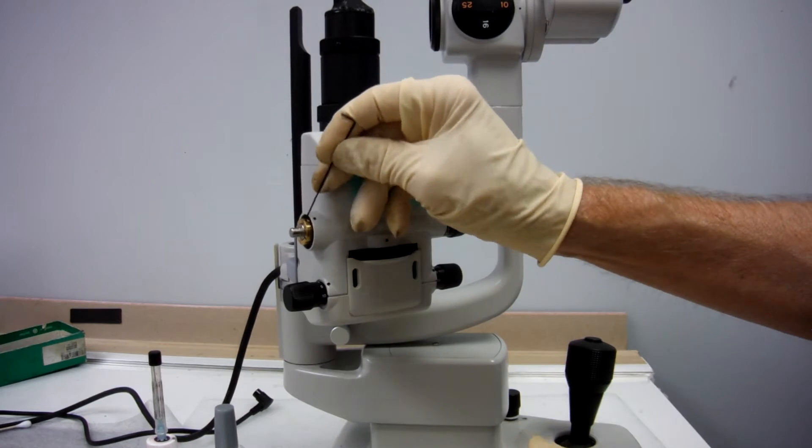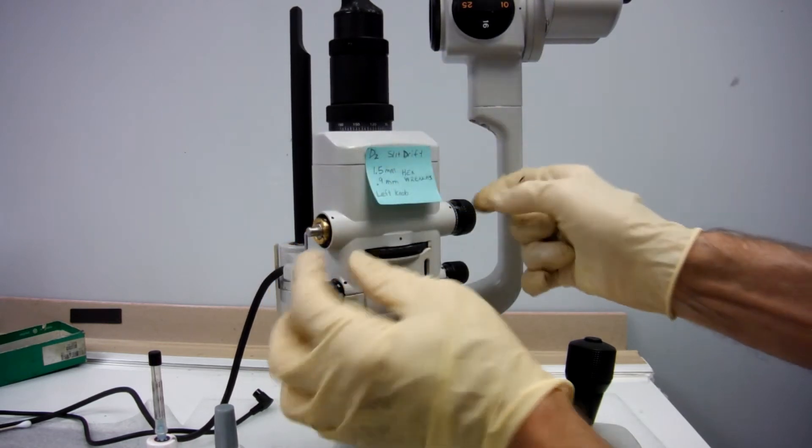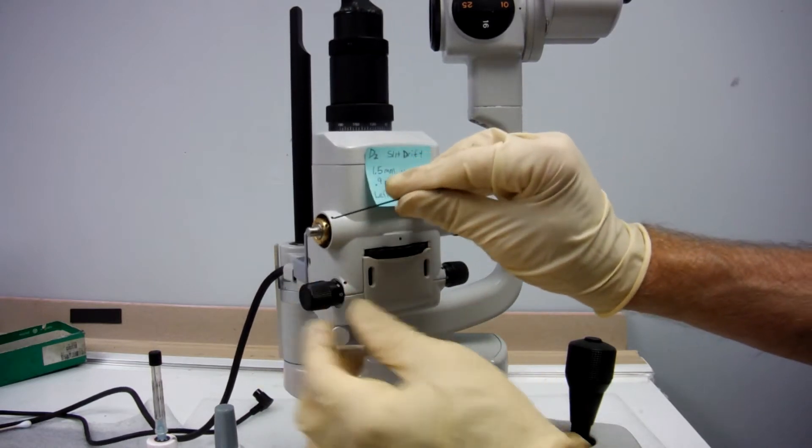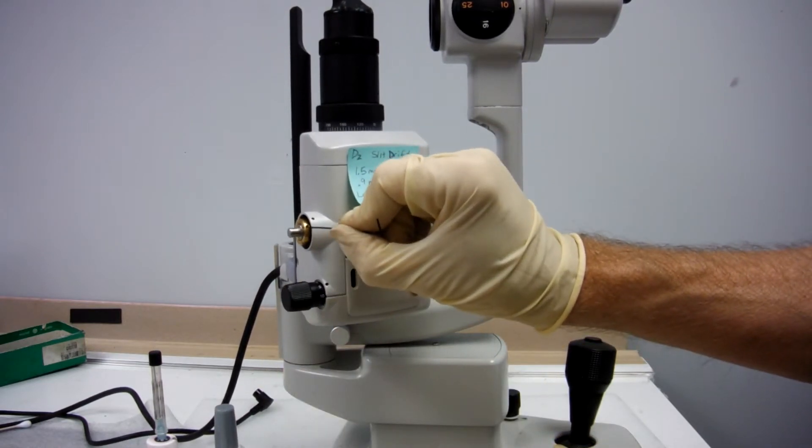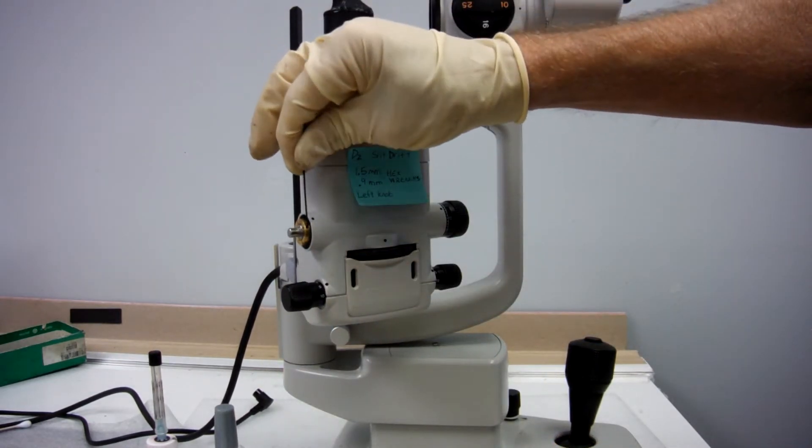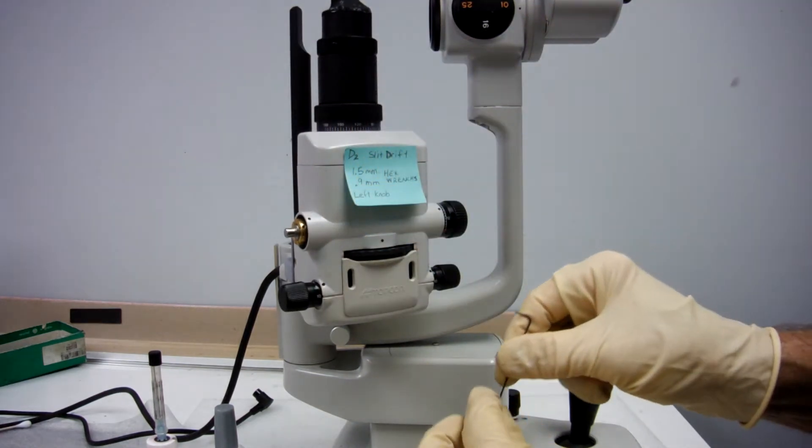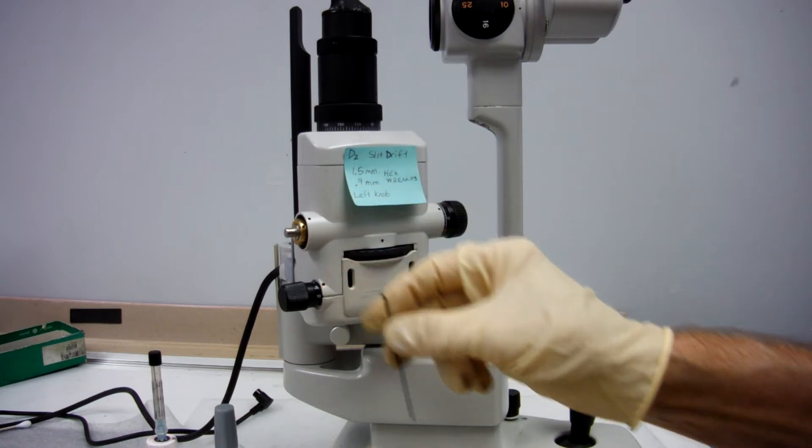And underneath here is another Allen wrench, and this is a .9mm or .035 inches. It's very small.